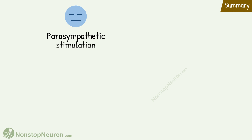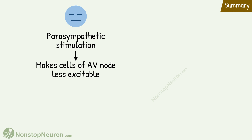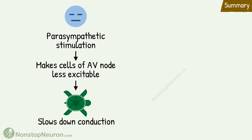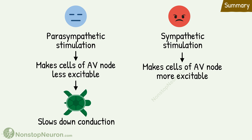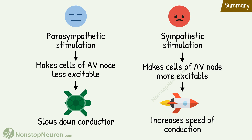Now let's have a quick summary. Parasympathetic stimulation makes the cells of the AV node less excitable, so the speed of impulse conduction increases.